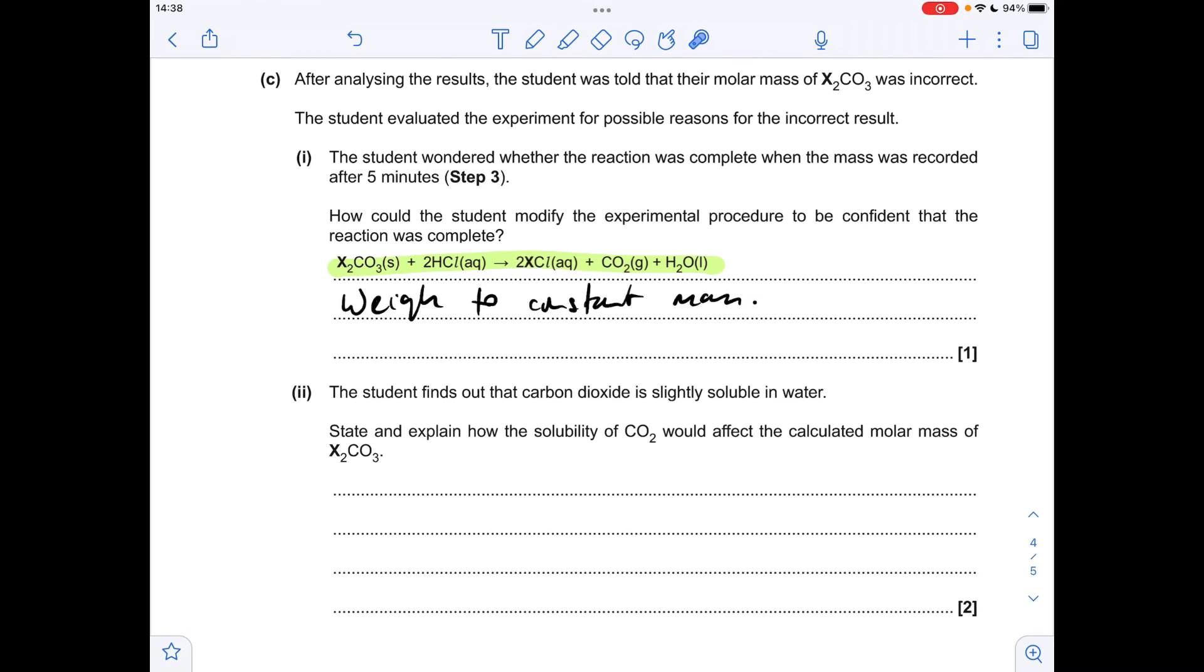Moving on to the final part, if some of the carbon dioxide is dissolved in water, that means the calculated mass of CO2 is going to drop. So that means the calculated moles of CO2 is going to be lower. If the moles of CO2 is lower, that means that the calculated moles of X2CO3 is also going to be lower. So then if you factor in how you calculate MR now, so mass over moles, if the moles is lower, that means the MR is actually going to be higher.